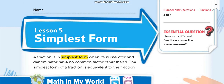Now some fractions are not in simplest form, so we make them simplest form. A fraction is in simplest form when its numerator and denominator have no common factor other than one.